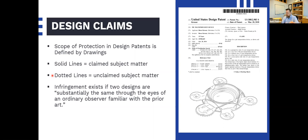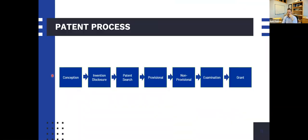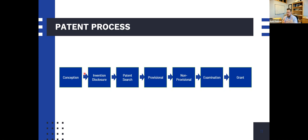That's all I'll cover on design patents — the rest will be more focused on utility patents. Taking through the patent process quickly: conception of the invention, then the invention disclosure, then typically a patent search, then in most cases for small companies a provisional application, then the non-provisional application, then examination, and then the patent grants. I'll talk about each one of these steps.